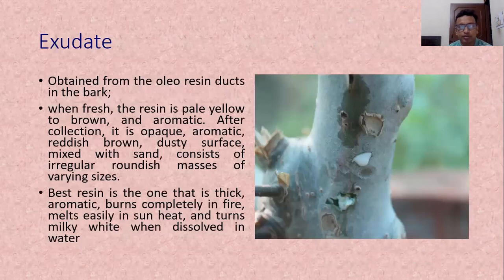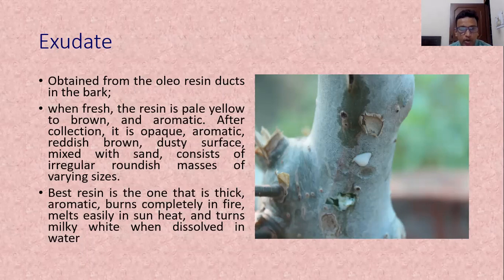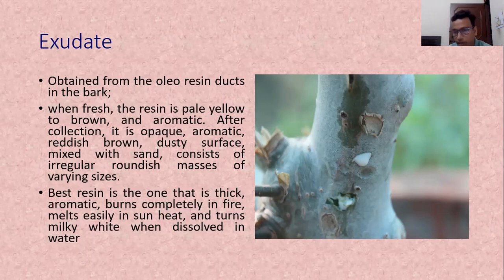The exudate is mainly obtained from the duct in the bark. It is an oleogum resin. When fresh, the resin is pale yellow or white-yellow in color and aromatic. After collection it is opaque, aromatic, reddish brown with a dusty surface mixed with sand, consisting of irregular round masses of various sizes. The best quality of resin is thick and aromatic; it burns completely in fire, melts easily in sunlight, and turns milky white when dissolved in water. The white milky exudate shown is the oleogum resin of Gugul.